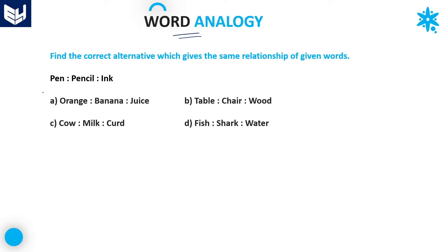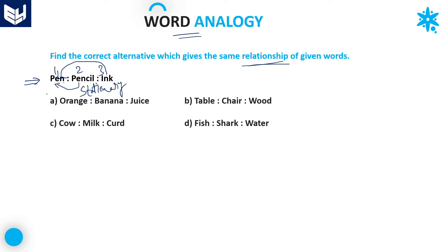See here, what is given in the question: pen, pencil, and ink. We have to identify the correct alternative based on the relationship. The relationship given is applied for pen, pencil, and ink — this is one, two, and three. Ink is there in pen. Pencil and pen belong to the same category, that is stationery items. Whereas ink is there in pen. It means three is there in one, and two and one belong to the same category.